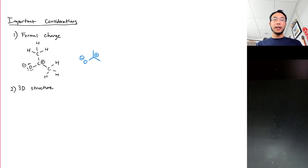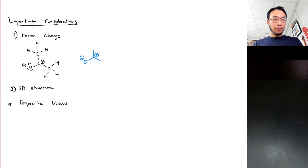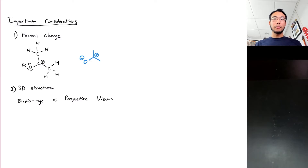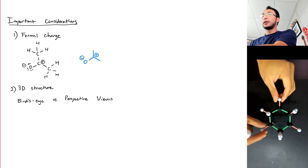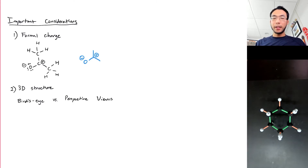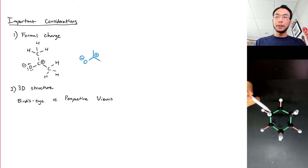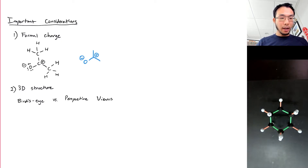Another major issue with line-angle drawings is that by definition we're trying to force a three-dimensional object onto a two-dimensional sheet of paper. There are a few approaches to dealing with this. One is to understand that we're always going to be taking one of two different perspectives on our drawings. The more common one is called a bird's eye view, where we're looking down on the molecule from above. For example, cyclohexane — C6H12 — viewed from a bird's eye view looks like a six-membered ring, with six carbons bonded in a ring and hydrogens attached.